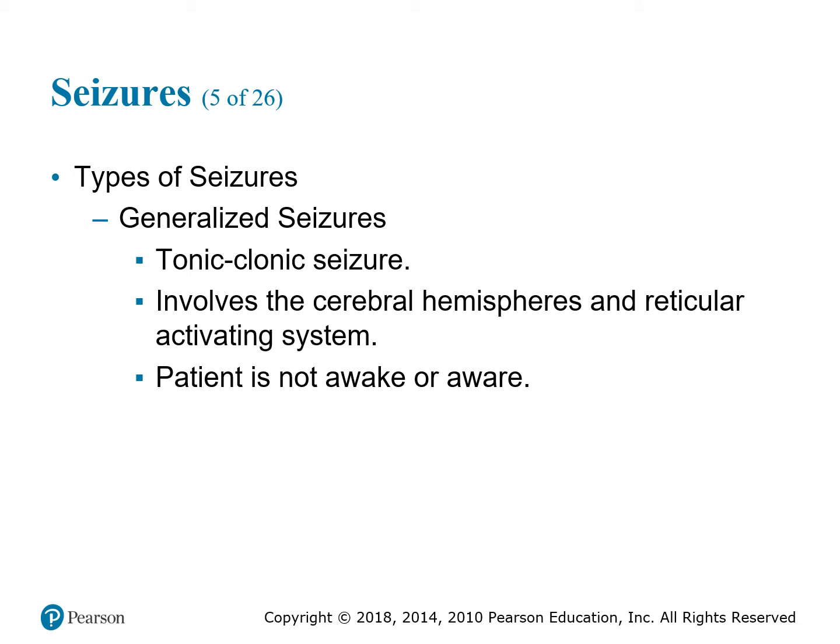Types of seizures — generalized seizures affect both hemispheres, so the patient is not awake or aware. These are considered tonic-clonic or grand mal seizures, where the patient has a period of muscle rigidity followed by contractions. Remember: generalized means the patient is not awake, not aware, both hemispheres are affected, and these are your tonic-clonic or grand mal type seizures.